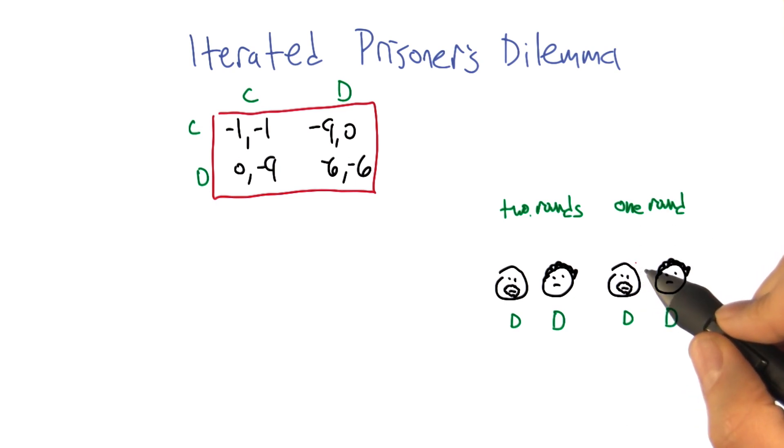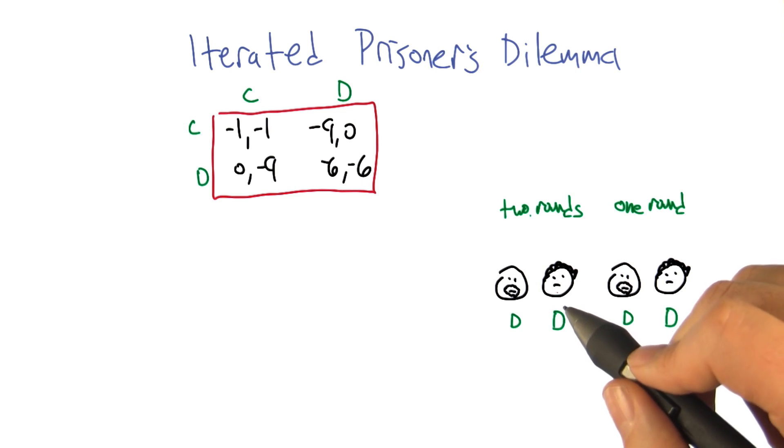So it's almost as if that round doesn't really matter. There's nothing we can do now that's going to change what they're going to do in that last round. So it's sort of like there's just one round and we're going to defect again.